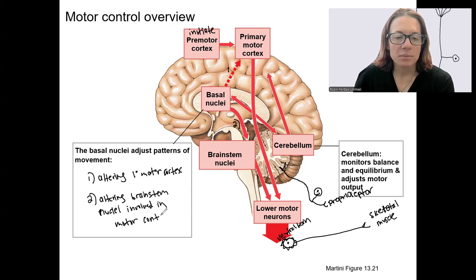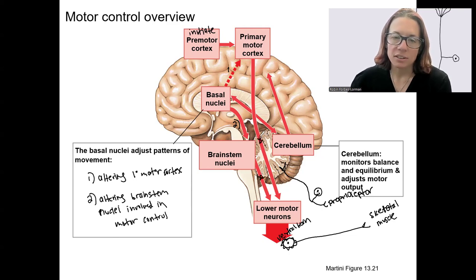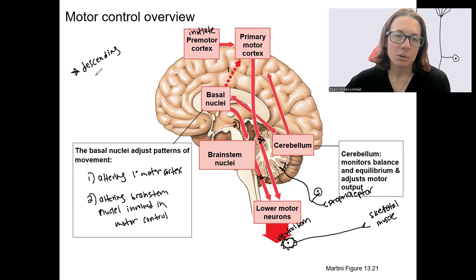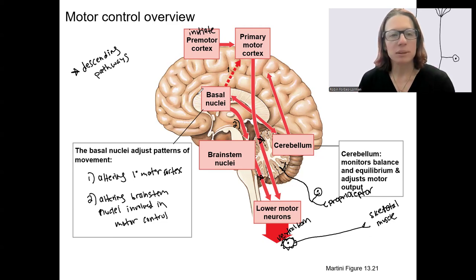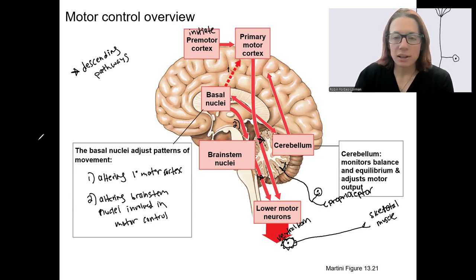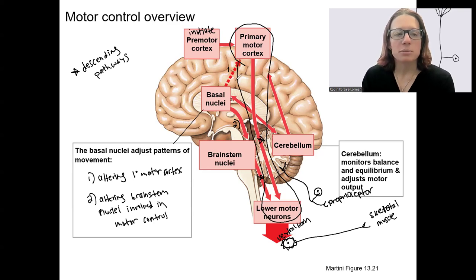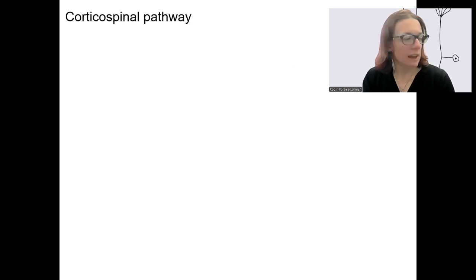From those brainstem nuclei, there are descending pathways as well. I should put little stars next to the descending — or motor — pathways that we're going to look at in the next videos. Basal nuclei and cerebellum both talk to each other, coordinating and fine-tuning movement. The first pathway we're going to do is from the primary motor cortex down to the lower motor neurons, which is involved in conscious control of movements.